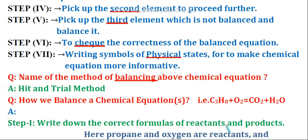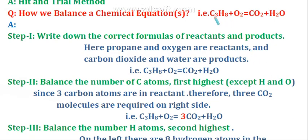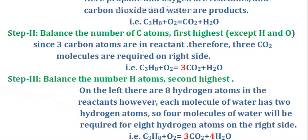Now, how do we balance a chemical equation? For example, propane C3H8 plus O2. The equation is C3H8 plus O2 equals CO2 plus H2O. Step one: write down the correct formula of reactants and products. Propane and oxygen are reactants; C3H8 is propane and O2 is oxygen. Carbon dioxide and water are products. Step two: balance the number of carbon atoms first — the highest, excluding H and O.